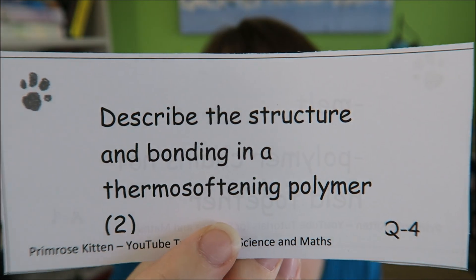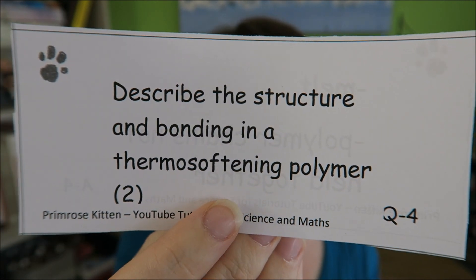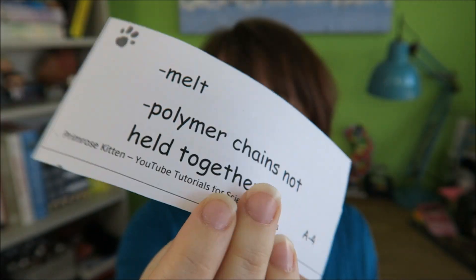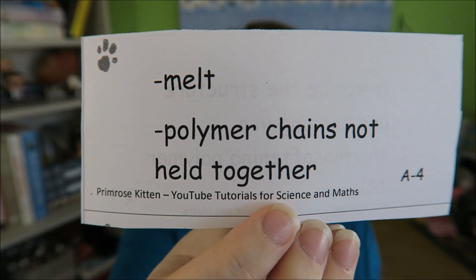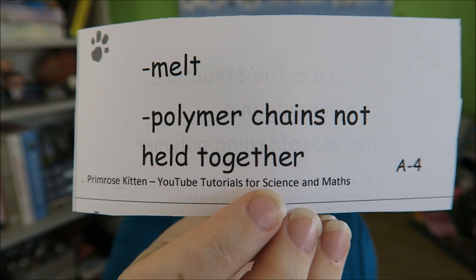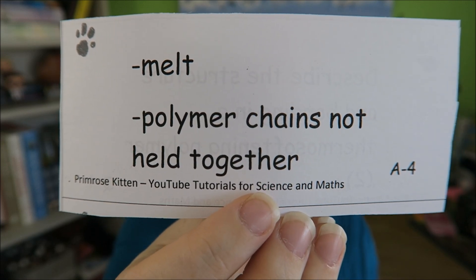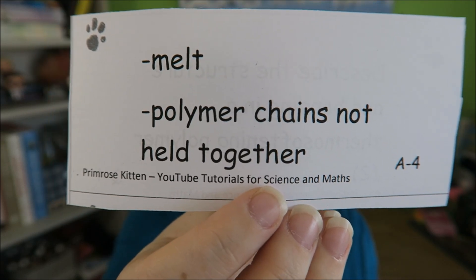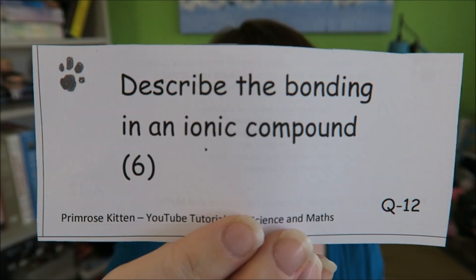Describe the structure of bonding in a thermosoftening polymer. In a thermosoftening polymer, the chains are all loose — they are not held together — which means it will soften and melt when heated.